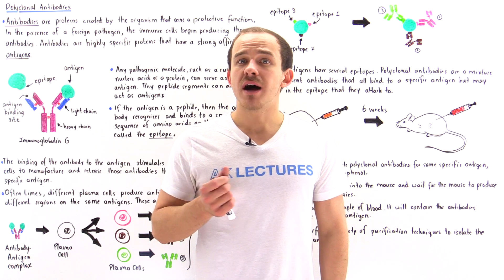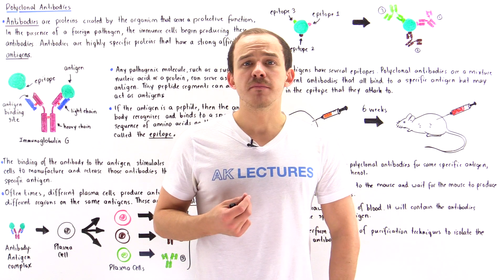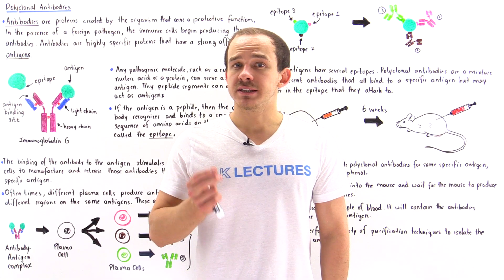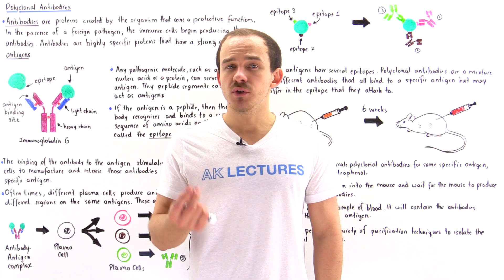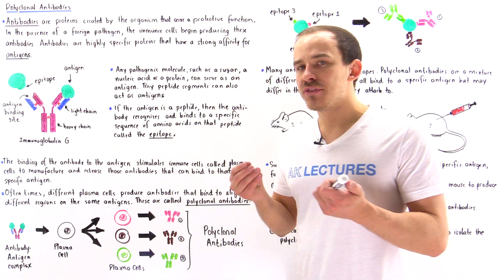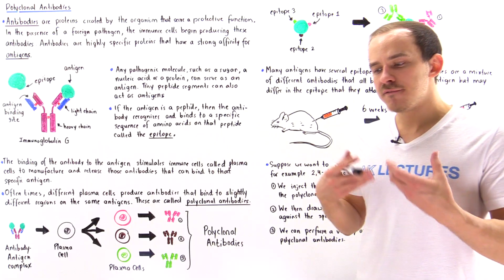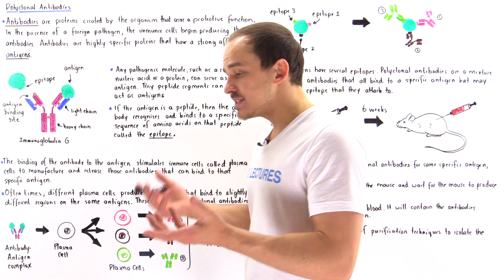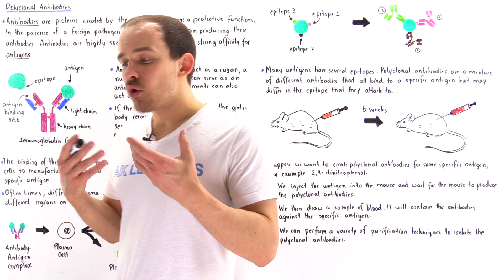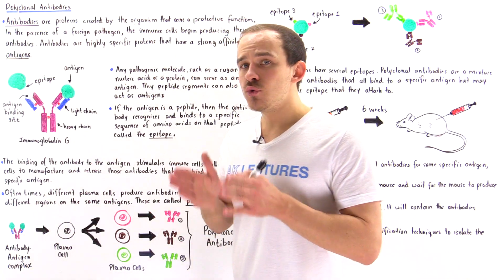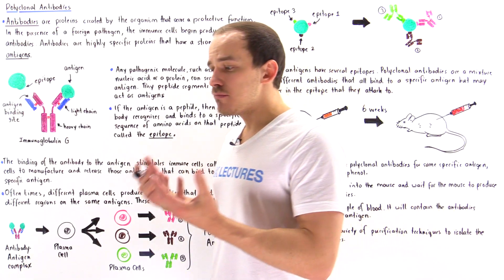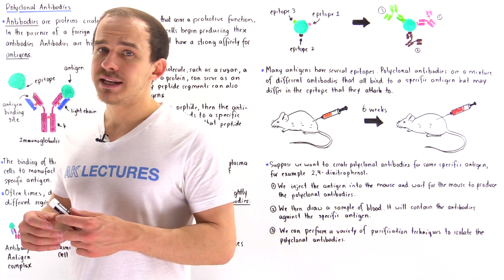Antibodies are macromolecules produced by the cells of our body and the cells of other organisms, and they serve a protective function — they are part of the immune system of that particular organism. So whenever a pathogenic agent, some type of infectious agent, for example a bacterial cell, makes its way into that organism, that organism responds by using its immune system to produce these special molecules we call antibodies.